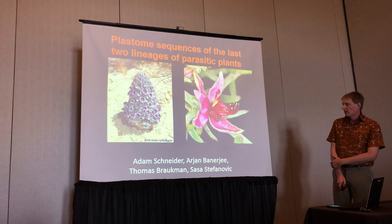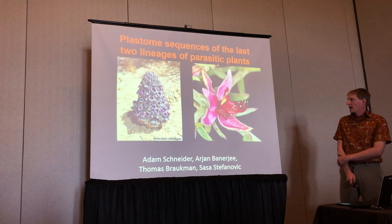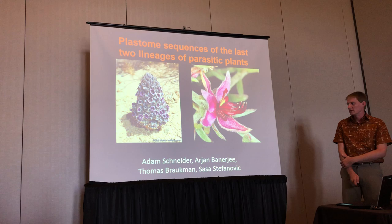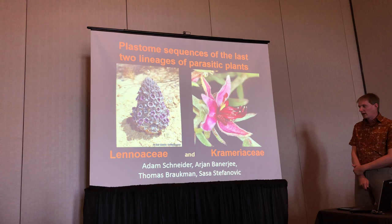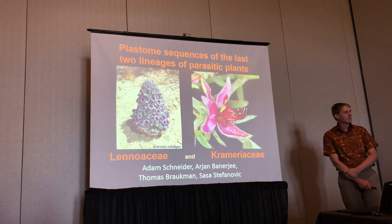I'll be talking about a topic that's common in a number of recent botany meetings, with a lot of interest in the last few years about trying to understand plastome evolution in parasitic plants. Specifically, I'm going to be talking about Lenoacee and Crameriaceae, which are two of the many lineages of these plants, conveniently found in arid regions of the New World. You could go out on a hike and potentially see both of these relatively close to here, although maybe not at this time of year.